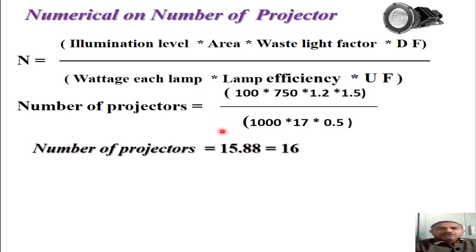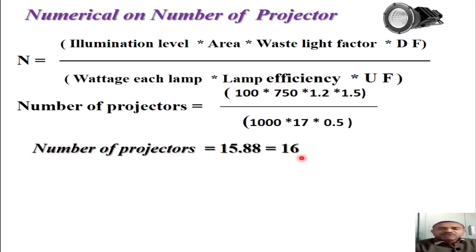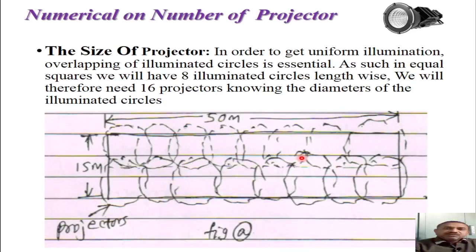Putting the values into the equation, we get the number of projectors as 15.88, which is rounded up to the next integer, giving 16. So for the given 750 square meter surface area at an illumination level of 100 lux, with the specified utilization factor, depreciation factor, and other parameters, we require 16 floodlight projectors.